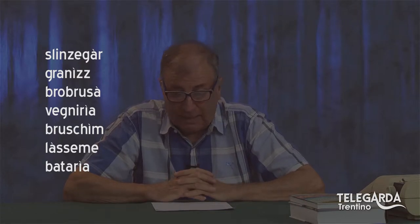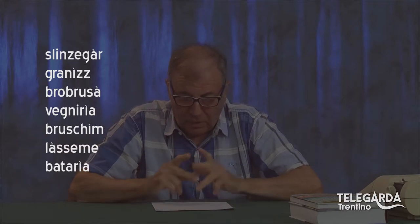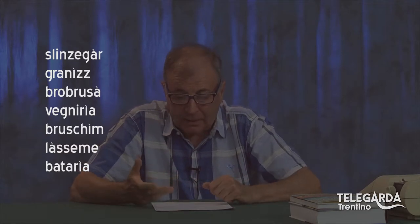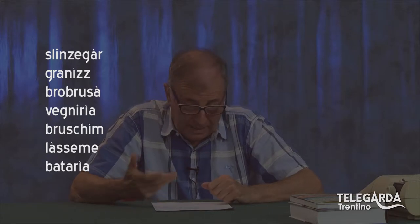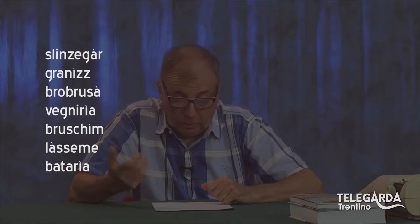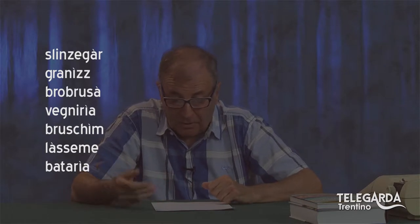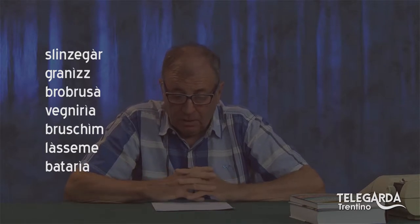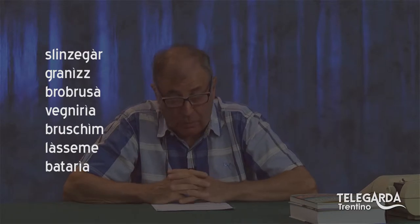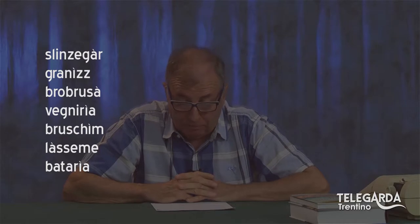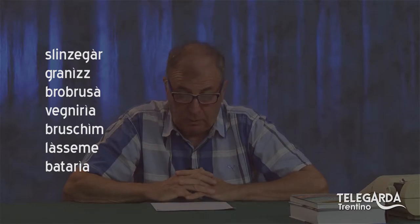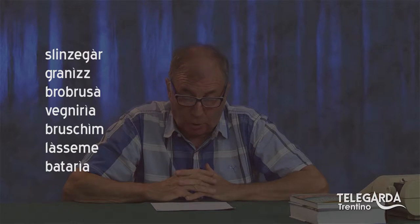Granìs o grànis? Il granìs — la fuligine, il nero della fornella — quindi un bel accento tonico sulla I. Brobrusà: un bel accento tonico sulla A finale. Venèria o venéria? Venéria, accento tonico sulla I. Brùschim o bruschìm? Bruschìm, accento tonico sulla I.